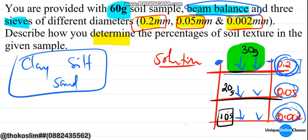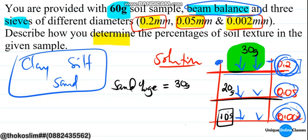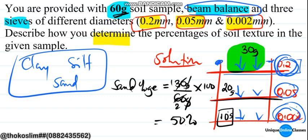To determine the percentages, let's start with sand. Percentage of sand equals the mass of sand over the total mass, times 100. That's 30 grams over 60 grams, times 100. 30 divided by 60 equals one half, so the percentage of sand is 50 percent.